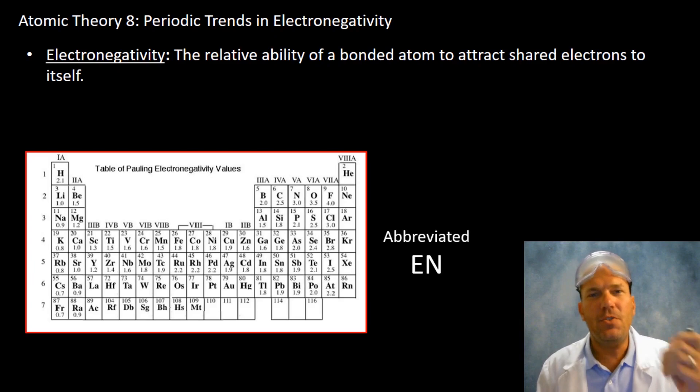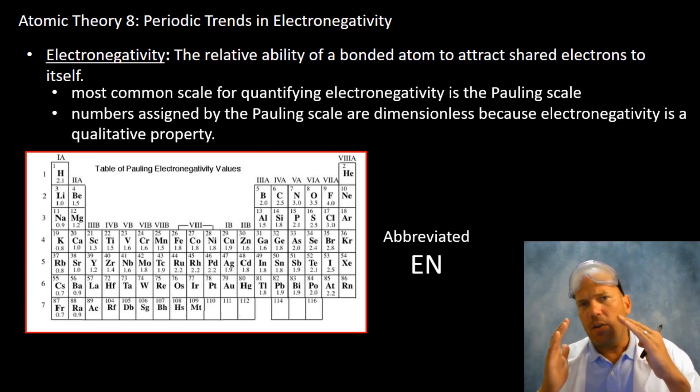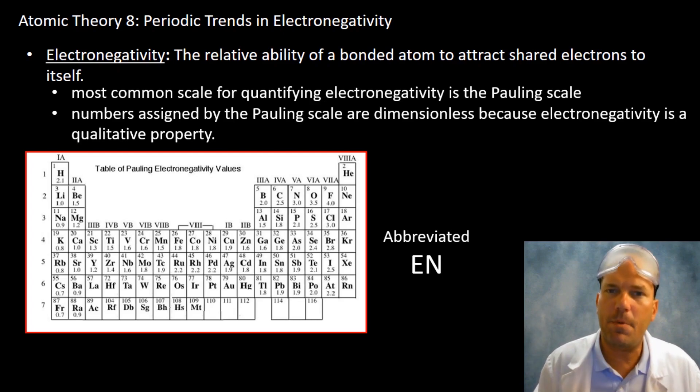In class you should have received what's called the Pauling scale of electronegativities. The Pauling scale was created by chemist Linus Pauling from his studies of gaseous atoms and bond energy.